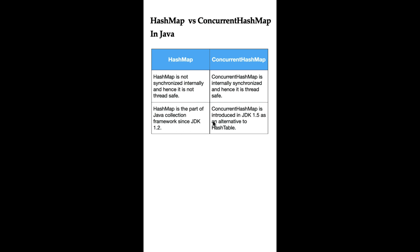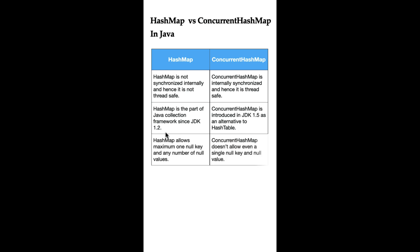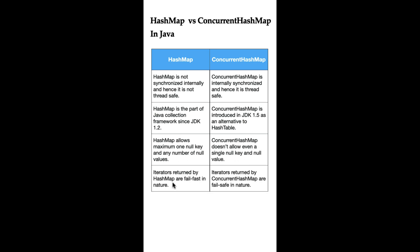HashMap is part of the Java Collections Framework since JDK 1.2, whereas ConcurrentHashMap was introduced as an alternative to Hashtable. HashMap allows a maximum of one null key and any number of null values. On the other hand, ConcurrentHashMap does not allow even a single null key or null values.